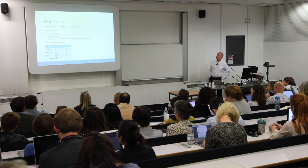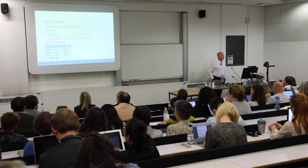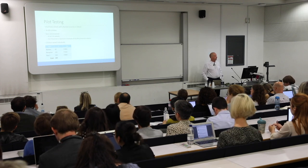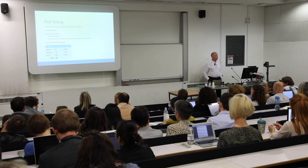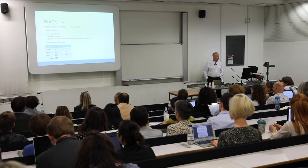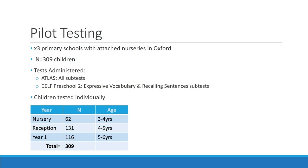So that's the form of the app. We've got data from the app for just over 300 children. The age distribution shows around 60 children in nursery, 130 or so in reception class, and 116 in Year One.